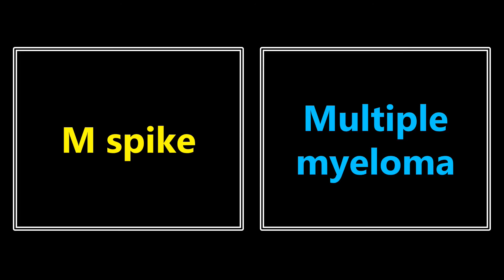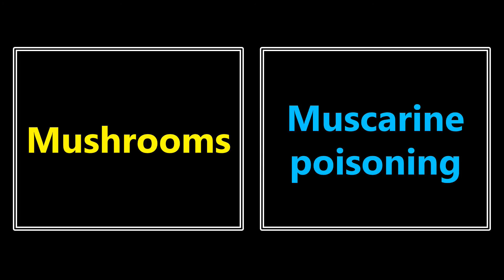The first one is M-spike. If you see this in a question, they may also give you a graph of the protein electrophoresis. If you see an M-spike, you want to be thinking about multiple myeloma. Next, mushrooms — if you see a question about a patient that ate mushrooms or went camping and may have eaten some vegetation, you want to be thinking about muscarine poisoning.